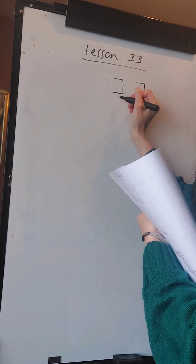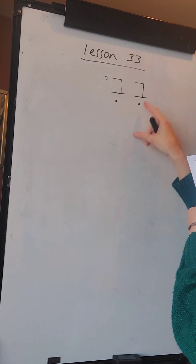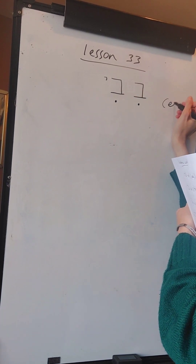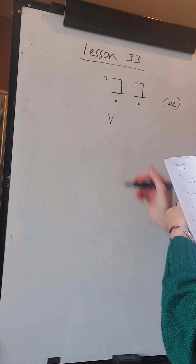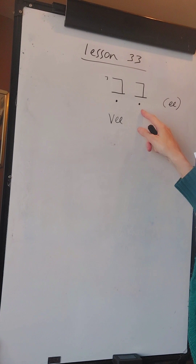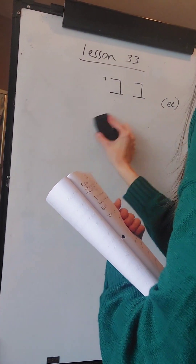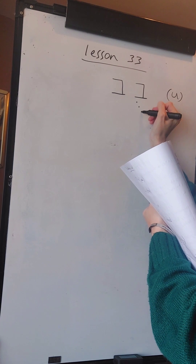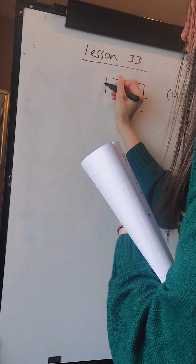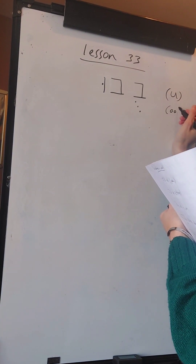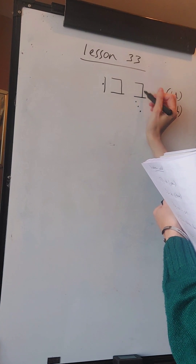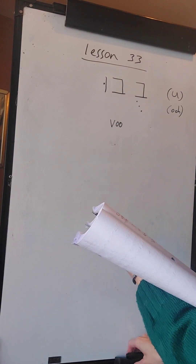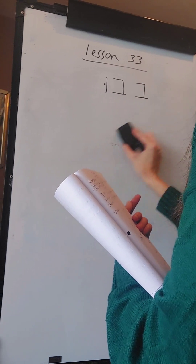With the I vowel - the I vowel can either be a dot underneath the Hebrew consonant, or a dot underneath the Hebrew consonant with a Vav to the side. The I vowel sounds as EE. The U vowel can be three dots underneath the Hebrew letter, or with a Vav with the dot in the center. The U vowel sounds as OO. So these would read as VEE and VOO.